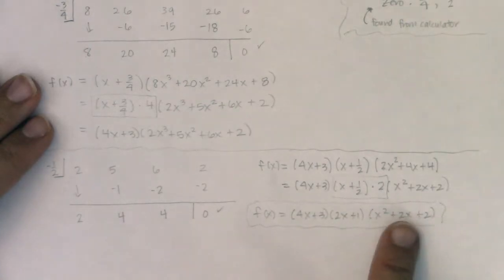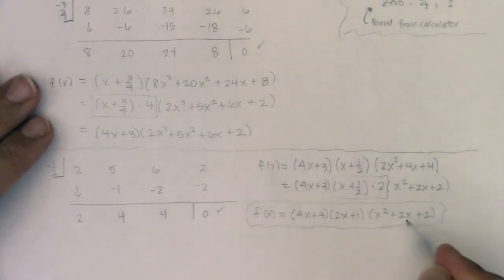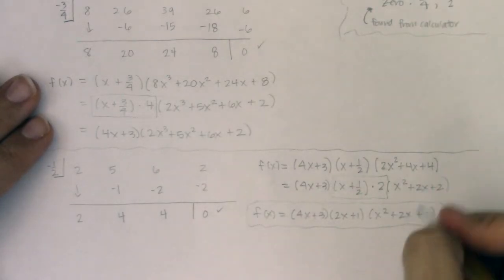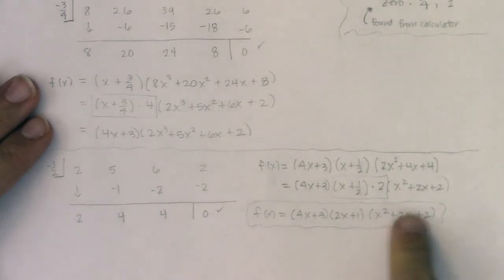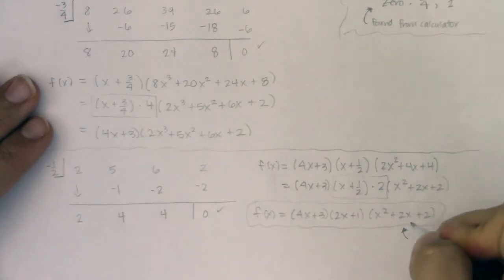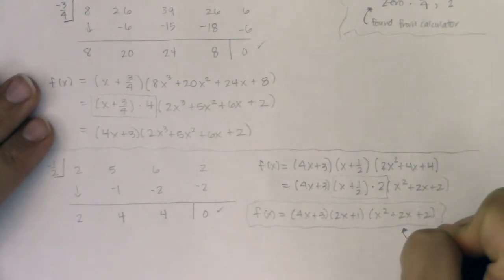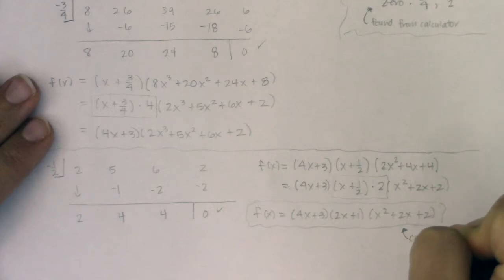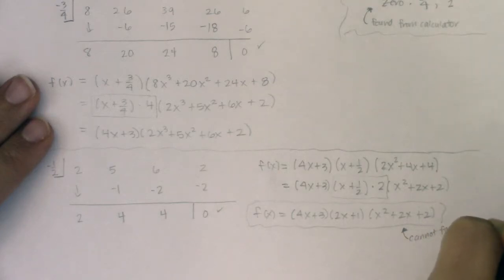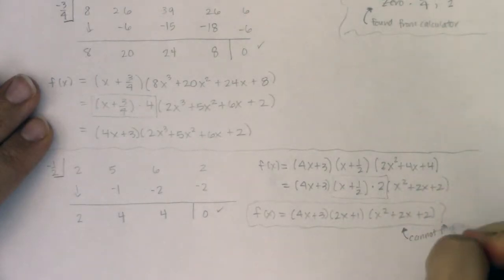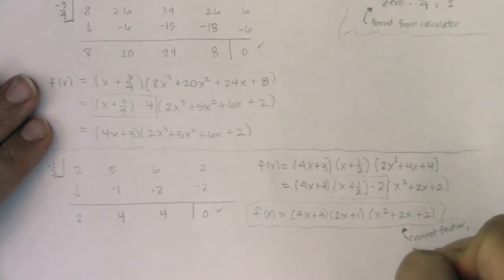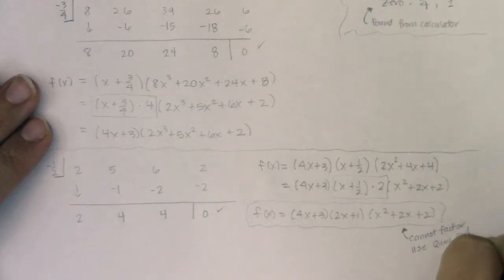Now the thing about this quadratic factor — I can't break it down. There's no way to factor x² + 2x + 2 into linear factors over the reals. I will say this is prime as is; I can't do anything more to simplify this, but I'm going to have to use the quadratic formula or complete the square to solve it.